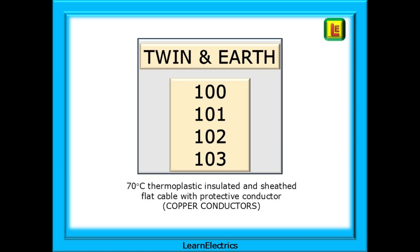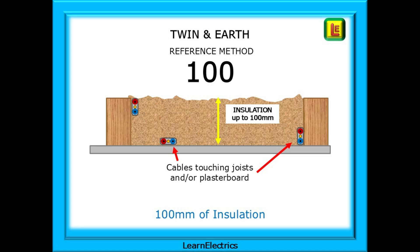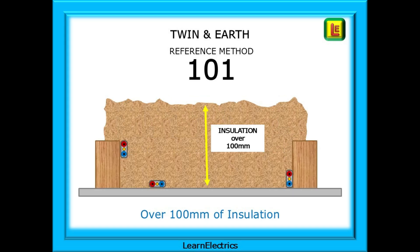Now for the methods specific to twin and earth cables - the hundreds. We know it as twin and earth, but the wiring regs call it 70 degrees Celsius thermoplastic insulated and sheathed flat cable with protective conductor, copper conductors. The first one is reference method 100, and I remember this because the insulation is up to 100 millimetres in thickness. The cables are touching either the joists, the plasterboard, or both. For reference method 101, think 101 is more than 100, so the insulation must be more than 100 millimetres in thickness. The cables are still touching the joists and/or the plasterboard, so 101 is over 100.